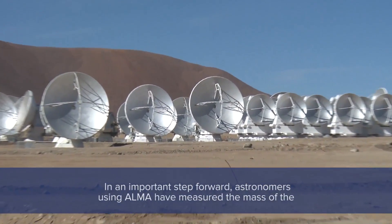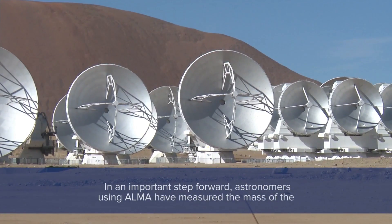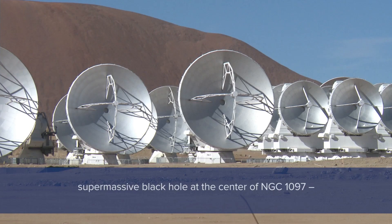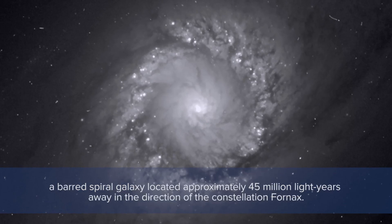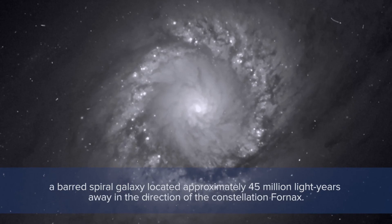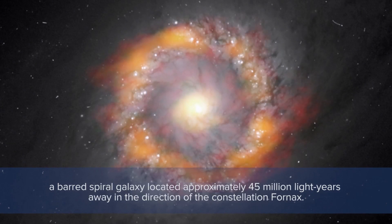In an important step forward, astronomers using the ALMA array have measured the mass of the supermassive black hole at the center of NGC 1097, a Barred Spiral Galaxy located approximately 45 million light years away in the constellation Fornax, the furnace.